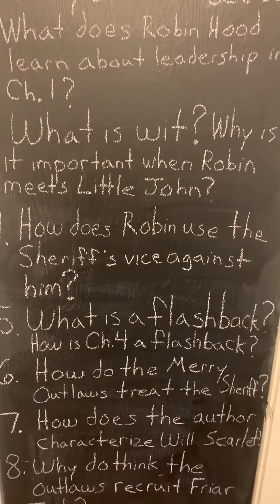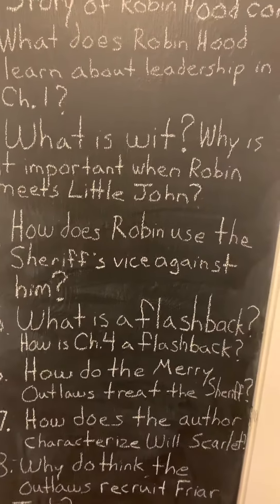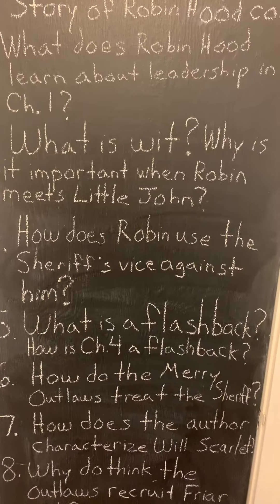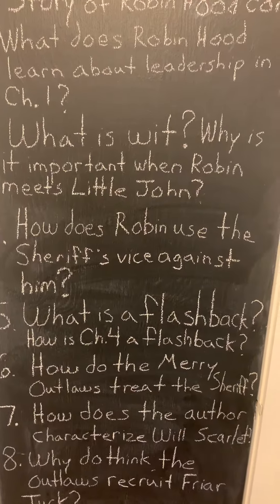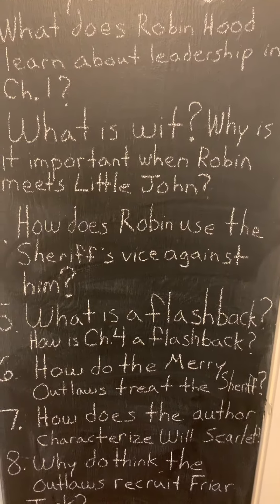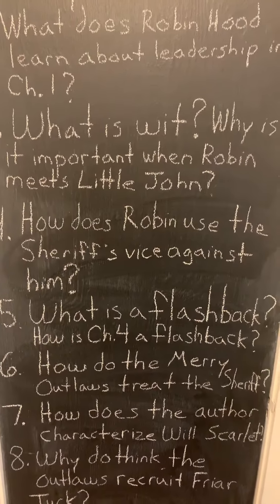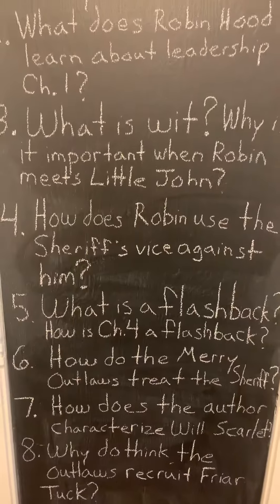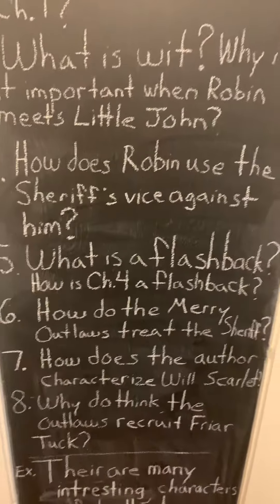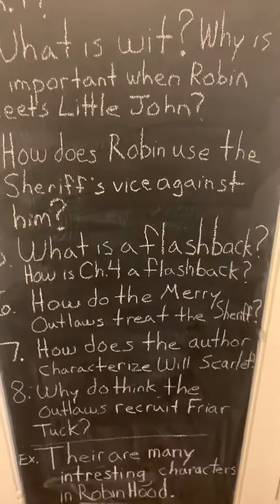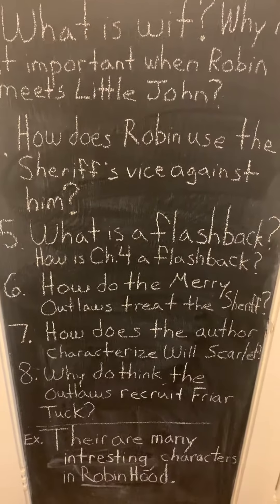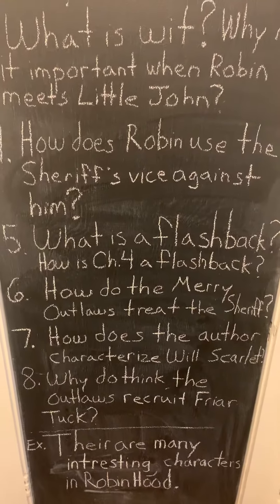Question four, from chapter three: How does Robin use the sheriff's vice against him? The sheriff's weakness — think about his sin or his weakness, his vice. What is it, and how does Robin Hood use it against him? Chapter four: What is a flashback and how is chapter four a flashback?